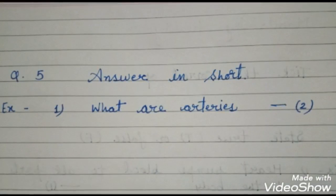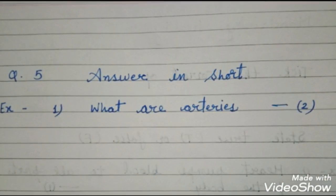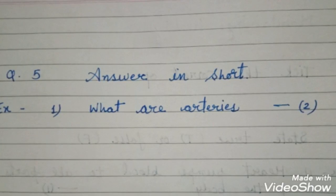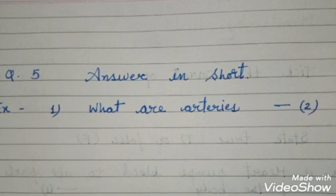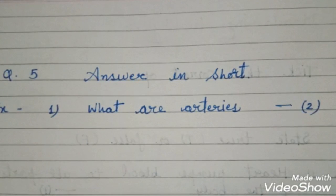Next, questions from 12 to 14 are answer in short. So here you will get four minutes to write the answer for each question. For example, what are arteries? So you have to submit your answer within four minutes and you will get two marks for each question.